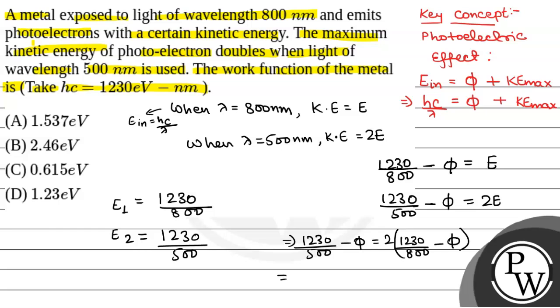On solving this, we will get phi at 0.615 electron volt. So the correct option will be option C.